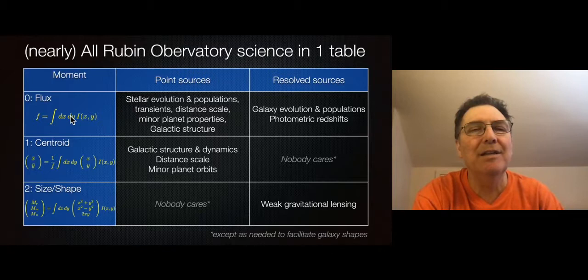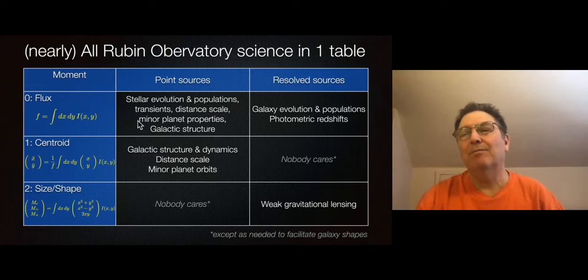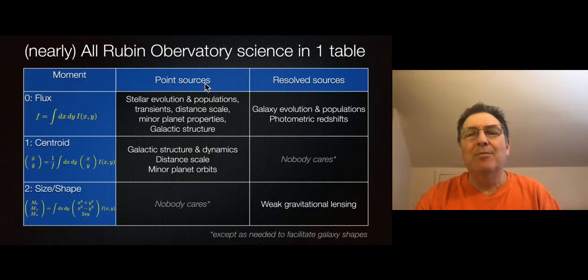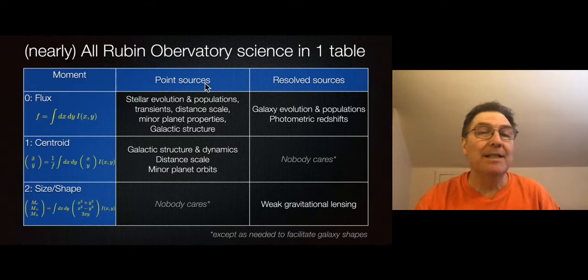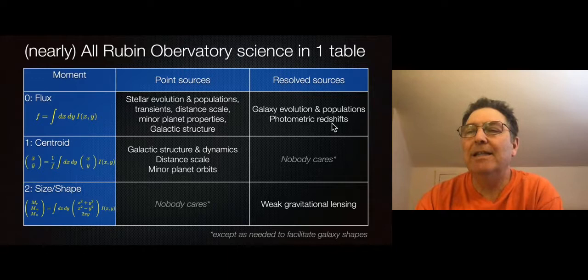These three rows of the table show the three major kinds of astronomical measurements. The first is flux — the integral across the sky of the surface brightness or intensity of light collected on the detector at position X and Y. Measuring total flux is crucial for point sources like stars: you need it for HR diagrams, stellar evolution studies, transient light curves, standard candles, and solar system objects' colors and rotations.